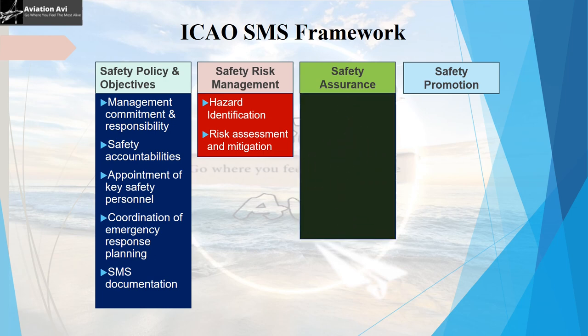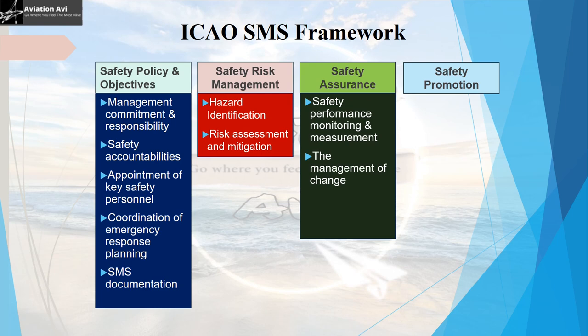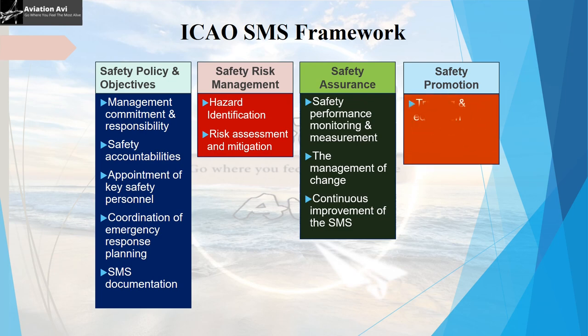The third pillar is Safety Assurance, which has three elements under it: safety performance monitoring and measurement — done through safety performance targets and safety performance indicators — management of change, and continuous improvement of SMS. Safety assurance evaluates the continued effectiveness of implemented risk control strategies and supports the identification of new hazards.